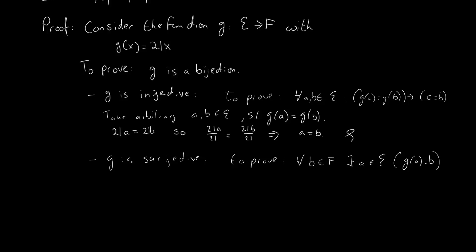In other words every point in F has some point in E that maps onto it. So how does that work? Well again we take an arbitrary b and now we need to show that there is an a in E that maps to this point b.